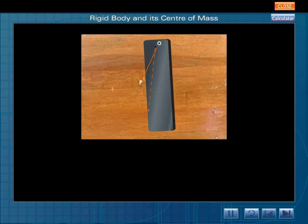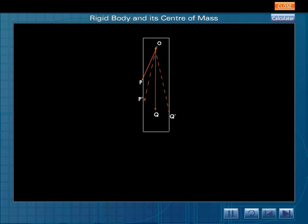You can observe that all the particles move through the same angle. You will notice that in the figure if P and Q are any two points moving about the point O, then angle POP' is equal to angle QOQ'. Now P' and Q' are the new positions of P and Q when the body is oscillating.